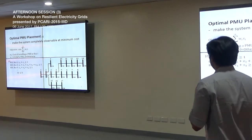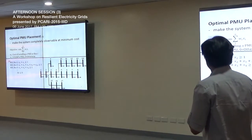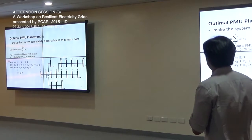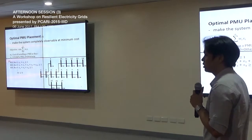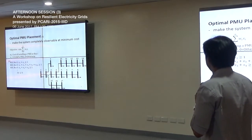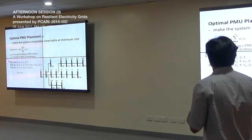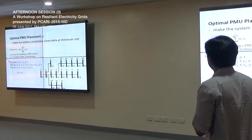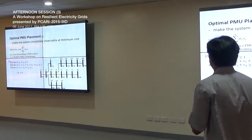With this optimization, our constraints are given by the connectivity seen from each bus. For example, from bus 1, which is connected to bus 2, bus 1 can only be observed if you install a PMU in bus 1 or bus 2. Looking at bus 2, it can only be observed if you install a PMU in bus 1, 2, 3, 9, or 15. Those are the constraints for this optimization problem.